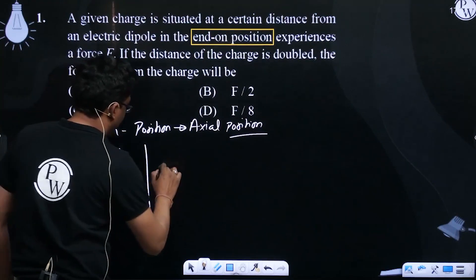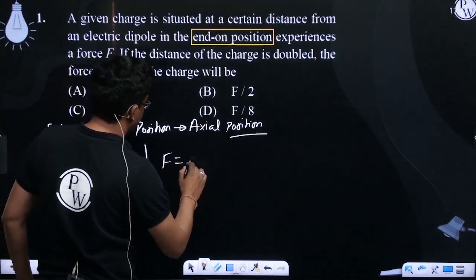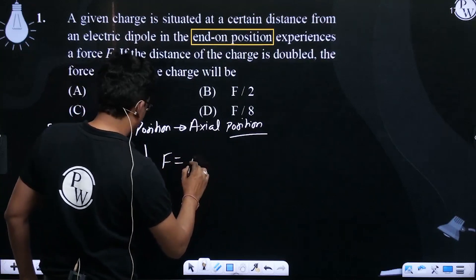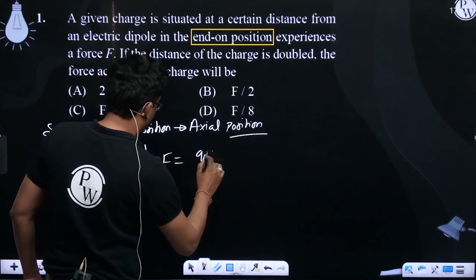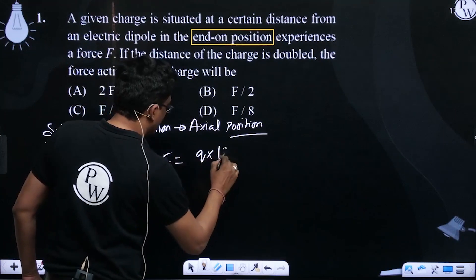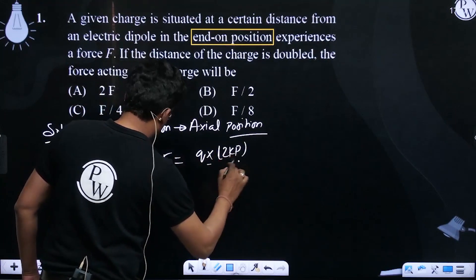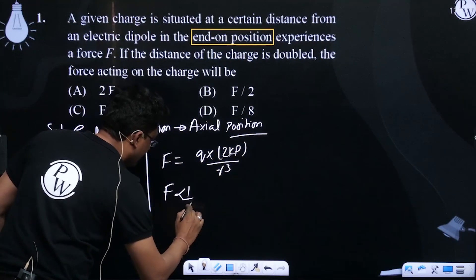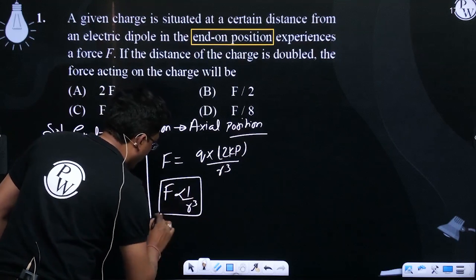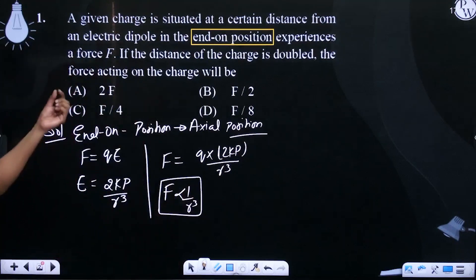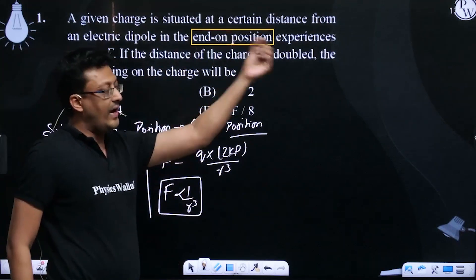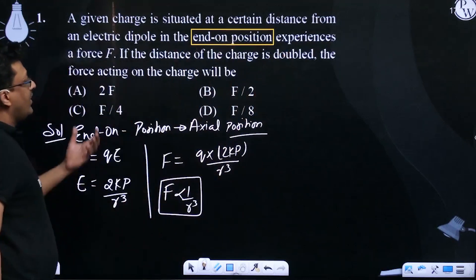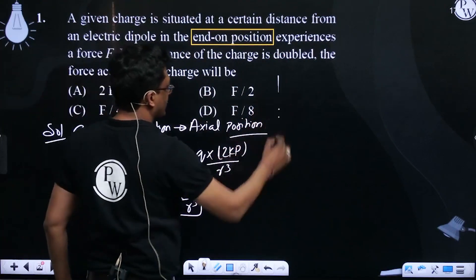Hence, jo force aapke paas aayega finally that will be your Q into 2Kp by R cube. And here we can see that this force is inversely proportional to cube of the distance from the center of the dipole to that point, right?